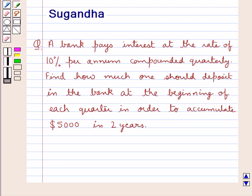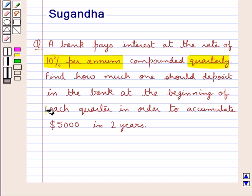Hello and welcome to the session. In this session we will discuss the following question: A bank pays interest at the rate of 10% per annum compounded quarterly. Find how much one should deposit in the bank at the beginning of each quarter in order to accumulate $5,000 in 2 years.